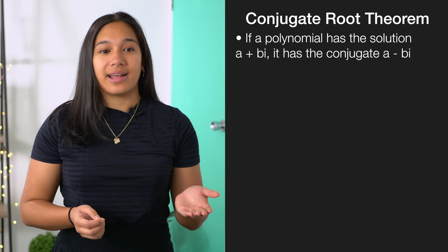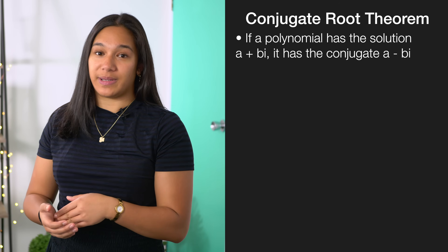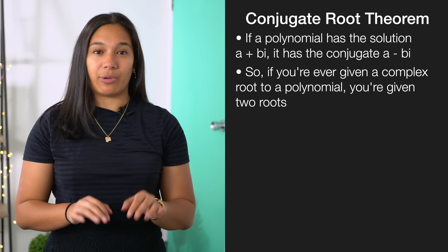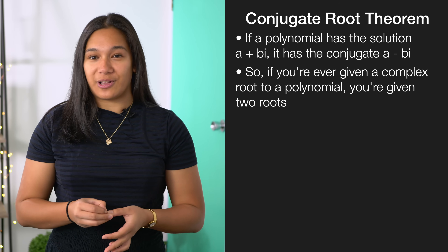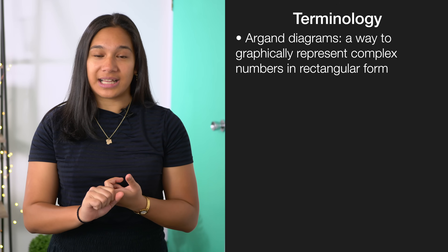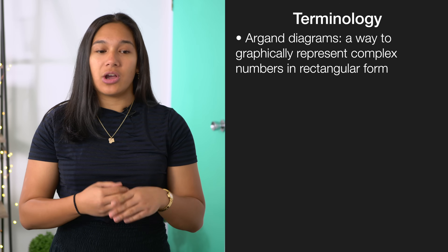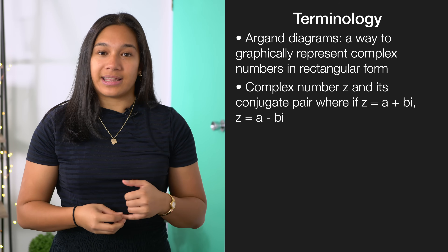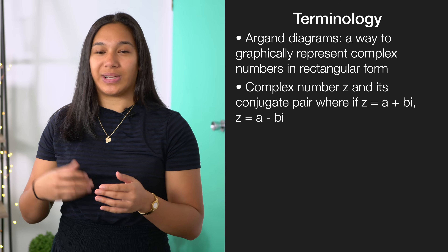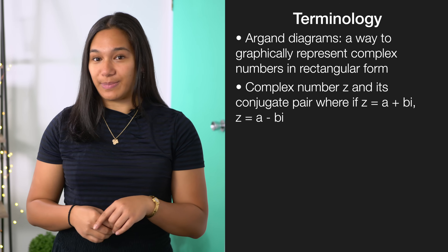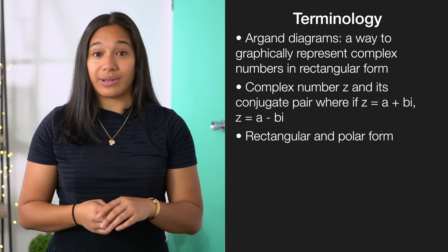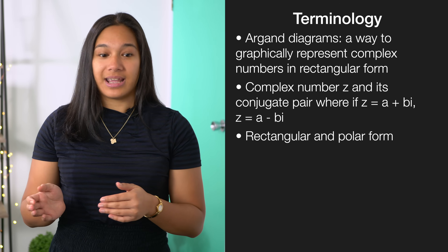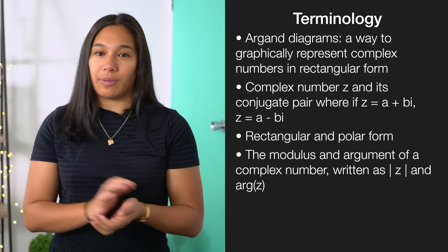Thirdly, remember the conjugate root theorem, which tells us that if a polynomial has a solution a + bi, then it also has its conjugate solution a − bi. There's a lot of new terminology in this standard. For achieved, you'll need to know: Argand diagrams, which show how to plot complex numbers on a graph in rectangular form; the conjugate z-bar equal to a − bi; rectangular and polar form; and the modulus and argument of complex numbers.